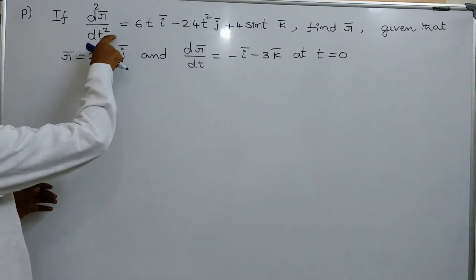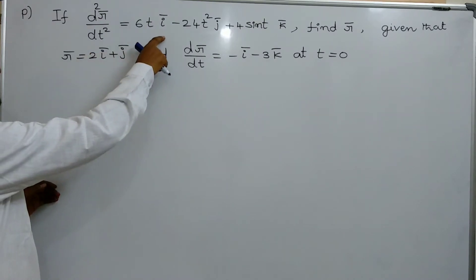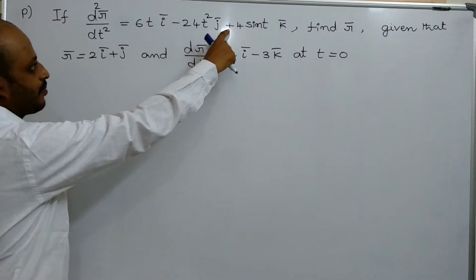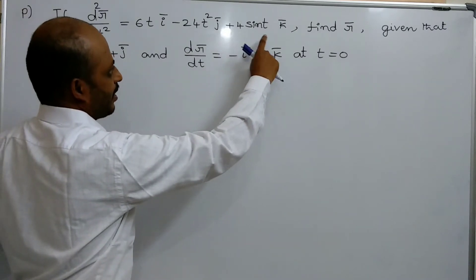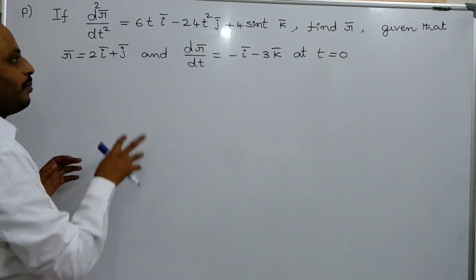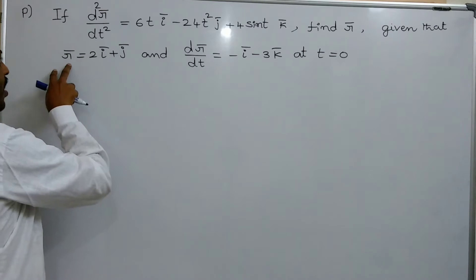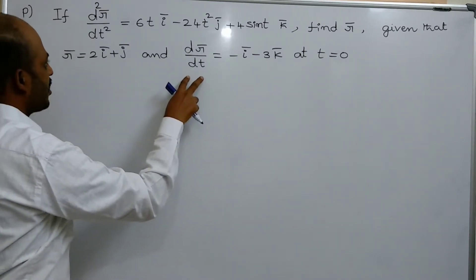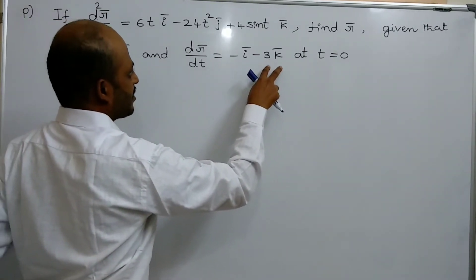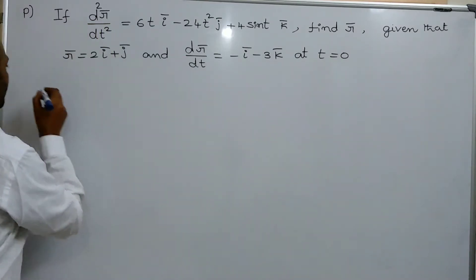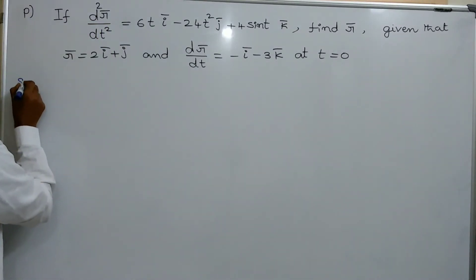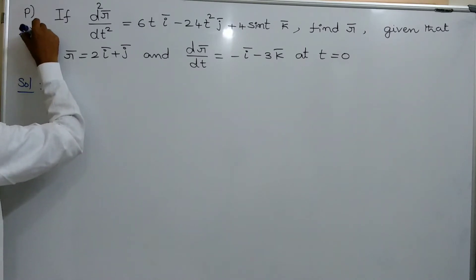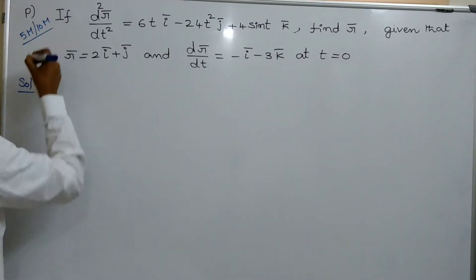If d²r̄/dt² equals 6tī minus 24t²j̄ plus 4sin(t)k̄, then find r̄ using the conditions: r̄ equals 2ī plus j̄, dr̄/dt equals minus ī minus 3k̄, and t equals 0. Let us solve this problem. This is a very important problem for 5 marks as well as for 10 marks.